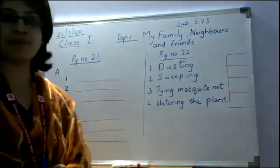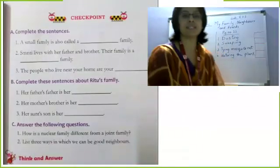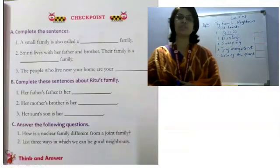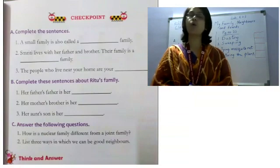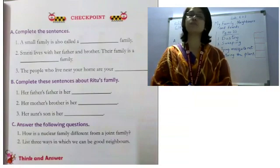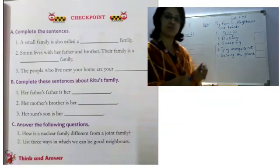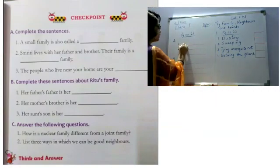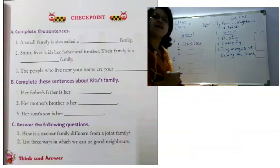Now coming to page number 21. The first question is complete the sentences. A small family is also called a dash family. What is the other name for a small family? Yes, it is nuclear family. I want you to write the answer in the first one. It is called nuclear family.